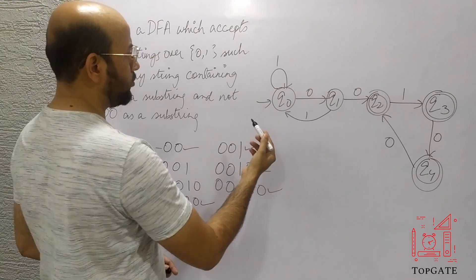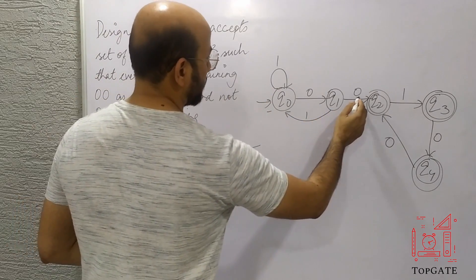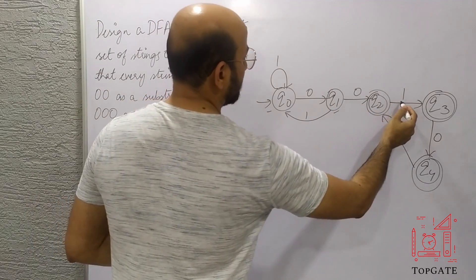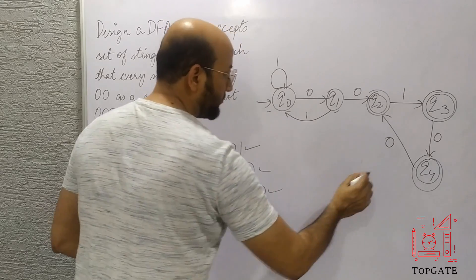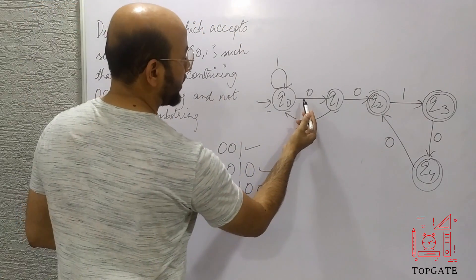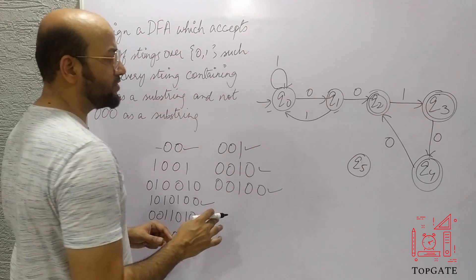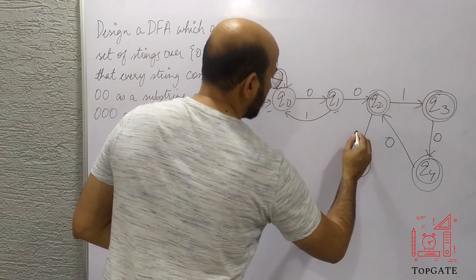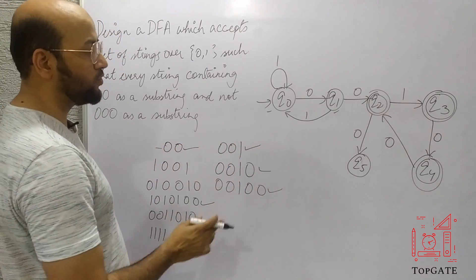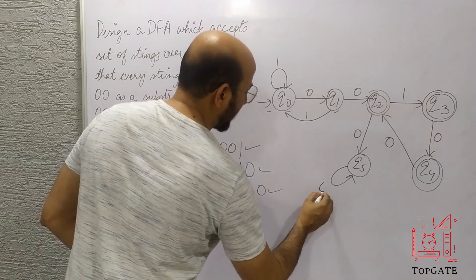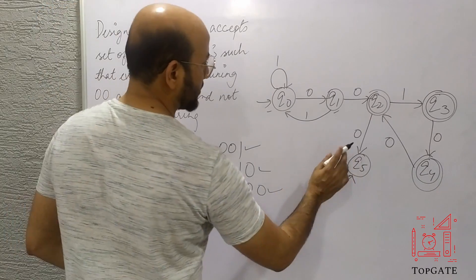Now let's complete the DFA. At q0 we have two paths: one for 0 and one for 1 — done. At q1 we have two paths: one for 0 and one for 1 — done. At q2 we have a path for 1 but no path for 0. If I add a 0-path from q2 to a final state, that would accept '000', which is wrong. So I create a dead state q5 and connect q2 to q5 on input 0. This way, three consecutive 0s lead to rejection.